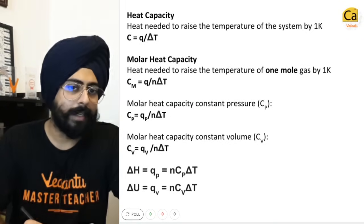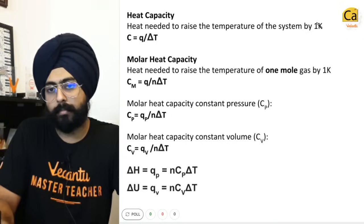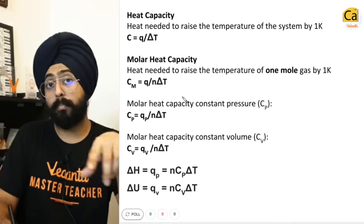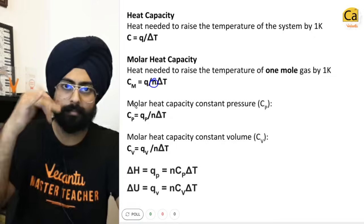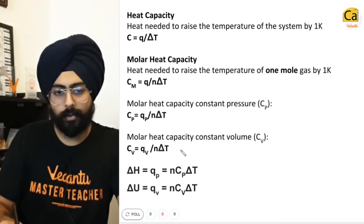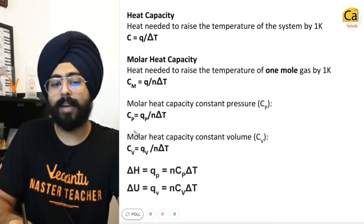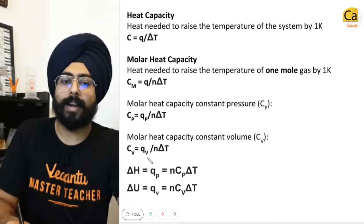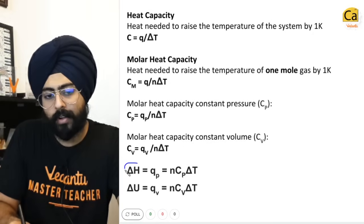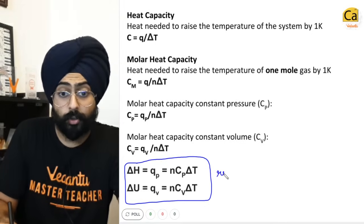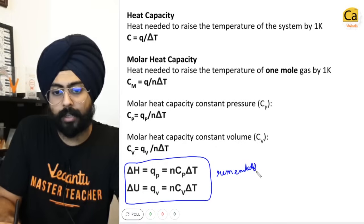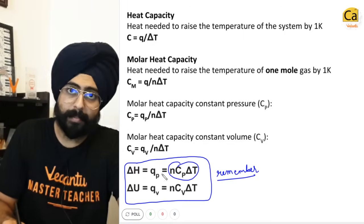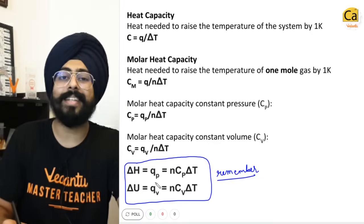Heat capacity is the heat needed to raise the temperature of the system by 1 Kelvin: C = Q / ΔT. Molar heat capacity is C_molar = Q / (nΔT). At constant pressure, C_P = Q_P / (nΔT); at constant volume, C_V = Q_V / (nΔT). Expanding these: ΔH = Q_P = nC_PΔT and ΔU = Q_V = nC_VΔT. These are very important formulas to remember.